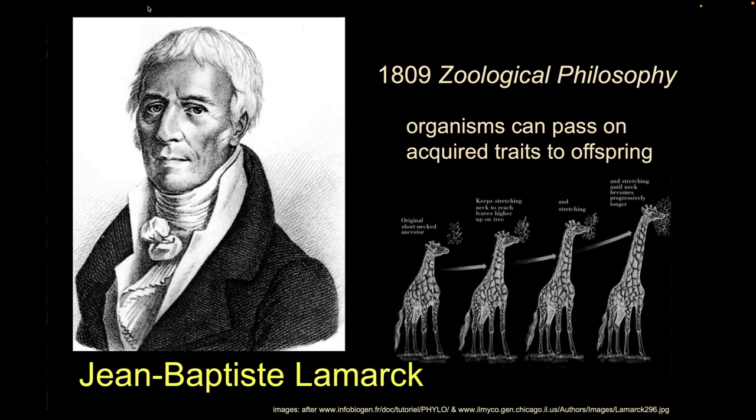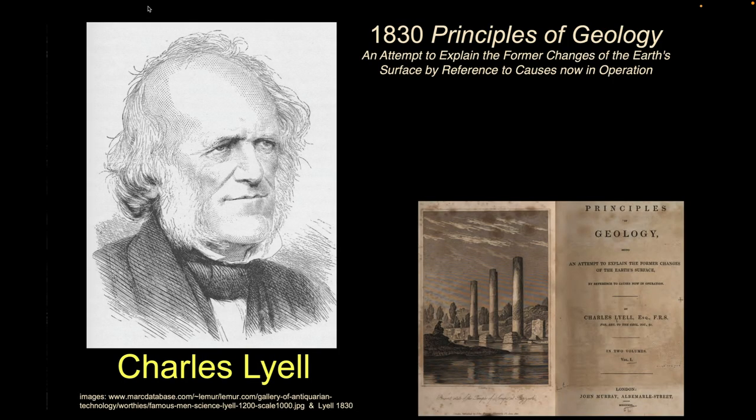We call this Lamarckian evolution — and it's wrong. But this idea is really powerful: that some essence of what makes us ourselves is passed on from parent to offspring.